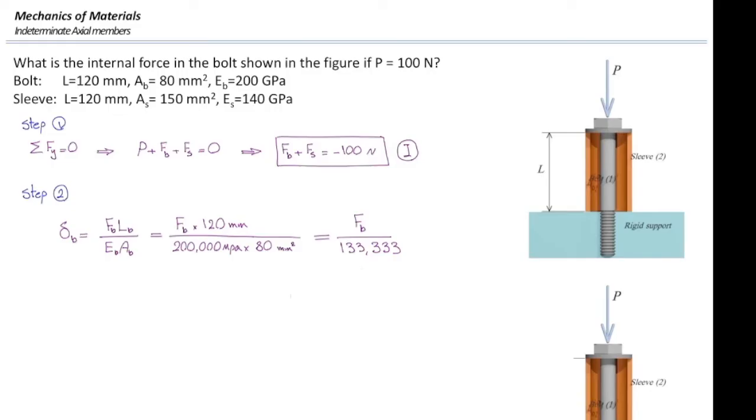Let's repeat that for the second element that we have for the sleeve. For the second element, we use the same equation, FL over EA, but we use the parameters related for that sleeve. Force in that element is unknown. Length is 120. Modulus of elasticity is 140 GPa. And area is 150 mm². And that simplifies to Fs divided by 175,000. So, we have determined the deformations in terms of force.